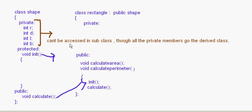Only the protected and public members can be accessed. This is very important — you may get exam questions about what data members and member functions are available in a derived class. You have to remember that private members also go to the derived class, but though they go into the derived class, they cannot be accessed. That is the key difference.